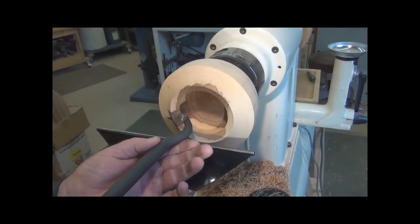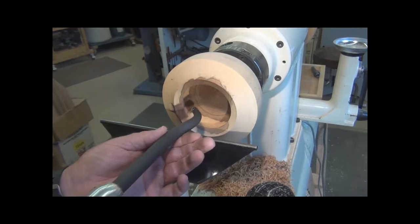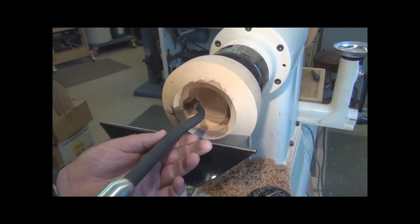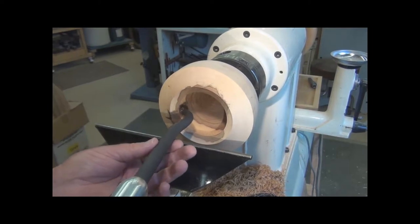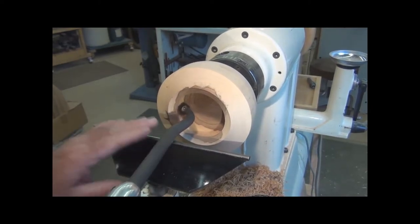This is the number five swan neck tool. To set it up for use, I'll make sure the tool rest is back far enough so when I'm cutting with this tool, the main shaft is riding on the tool rest, not the tapered crook.